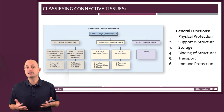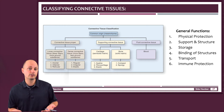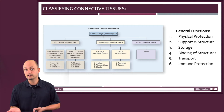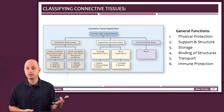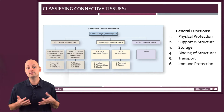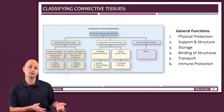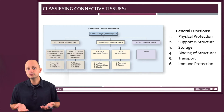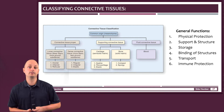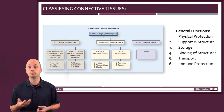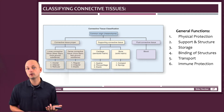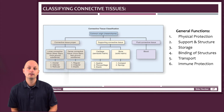We could say connective tissue binds other structures together — examples of that would be blood, areolar connective tissue, reticular connective tissue, as well as the dense irregular and regular connective tissues. The storage functions of connective tissue are mostly due to bone and blood and adipose tissue, and transport and immunity are mostly a function of the blood.